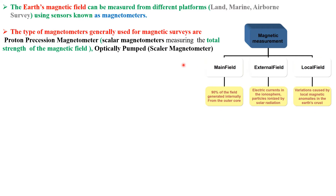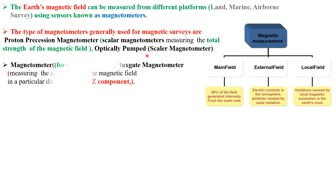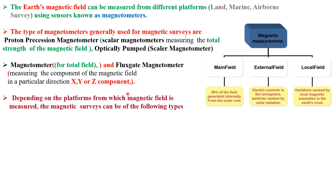There are two types of magnetometers: scalar and vector. The proton precession magnetometer measures the total magnetic field and is called a scalar magnetometer. The optically pumped magnetometer is also a scalar magnetometer. The vector magnetometer — the fluxgate magnetometer — measures the component of the magnetic field in a particular direction, either H, Y, or Z.